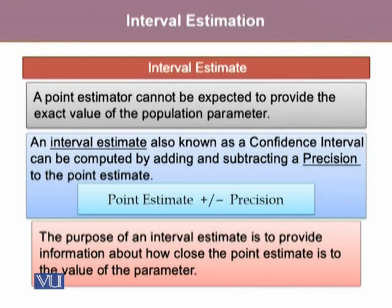It is unlike the point estimator, which cannot be expected to provide the exact value of the population parameter. But an interval estimate, also known as the confidence interval, can be computed by adding and subtracting a precision to the point estimate.